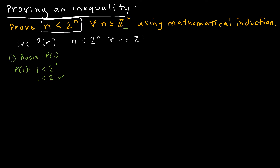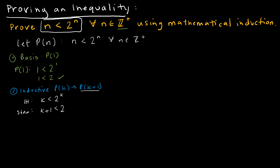Now I have to show the inductive step. The inductive step says: assume p(k), show that it implies p of k plus 1. So my inductive hypothesis is k is less than 2 to the k. And what do I need to show? I need to show p of k plus 1. So I'm going to take my inductive hypothesis and replace k with k plus 1, giving me: k plus 1 is less than 2 to the k plus 1.